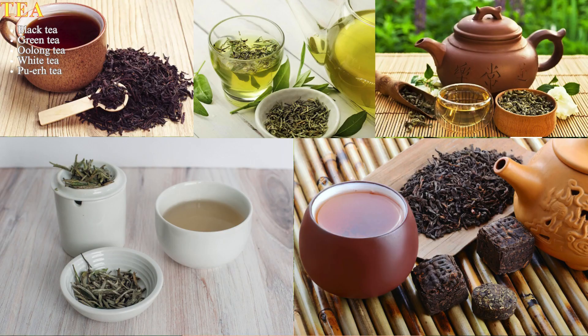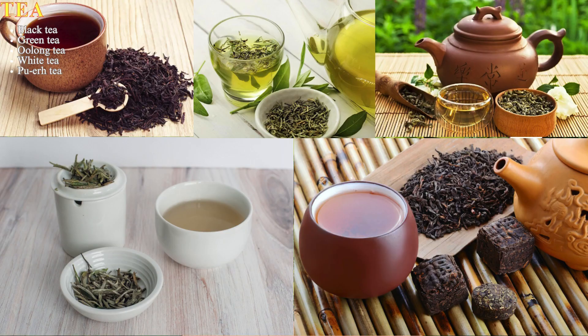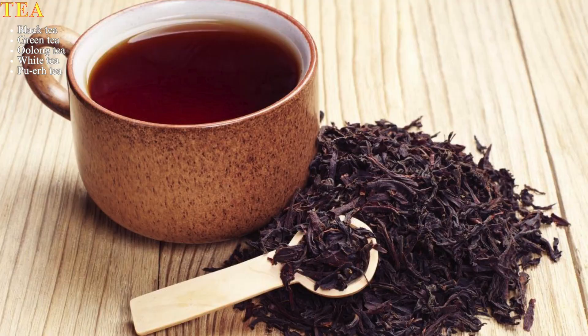Types of tea include black tea, green tea, oolong tea, white tea, and pu-erh tea. Each type is made from the same plant, but the leaves are processed differently, resulting in different flavors, colors, and caffeine levels. Black tea is the most common type of tea in the world, made from fully oxidized leaves.